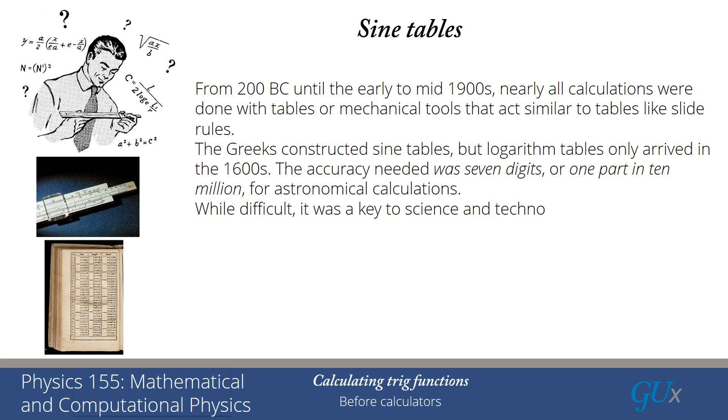Now, while it was difficult to generate these tables, they were really a key to science and technological advances because without them it was virtually impossible to do the complicated calculations that were needed to actually determine things like what was the orbit of Jupiter, including all the perturbations from the other planets, or how do I determine the tides, or how do I make sure my steam engine doesn't explode on me, and so forth.